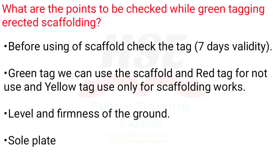What are the points to be checked while green tagging erected scaffolding? Before using a scaffold, check the tag — 7 days validity. Green tag means we can use the scaffold, red tag means do not use, and yellow tag means use only for scaffolding works.